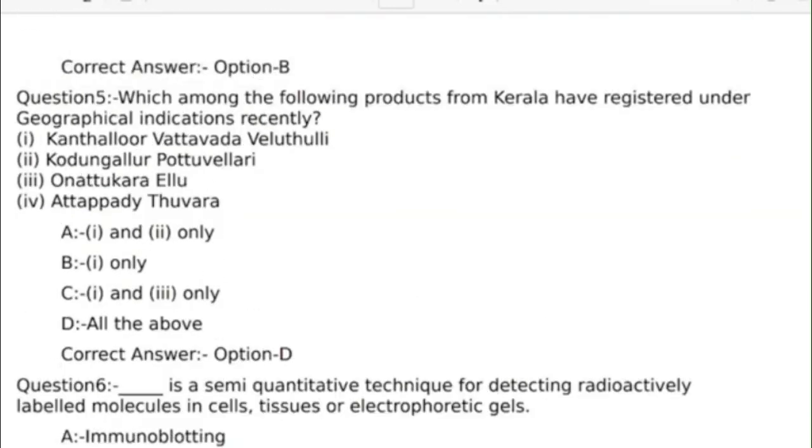Fifth question: Which among the following products from Kerala have registered under geographic indications recently? Correct answer: Option D, All of the above.